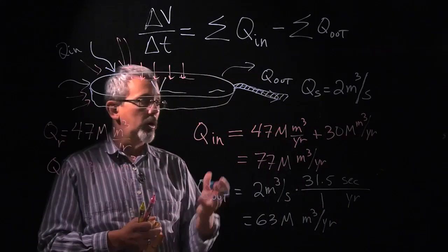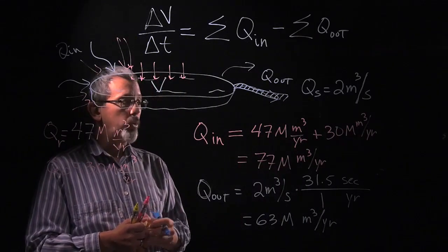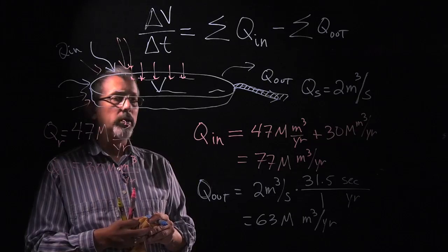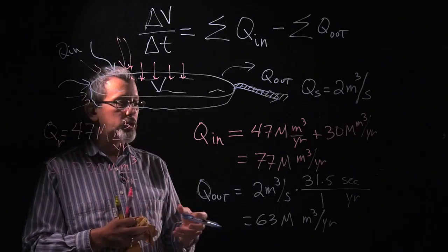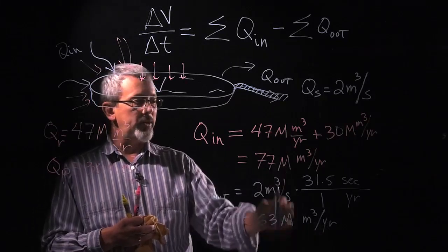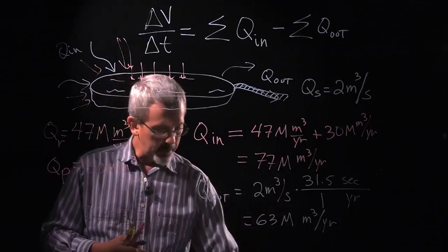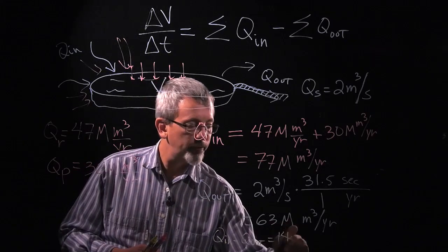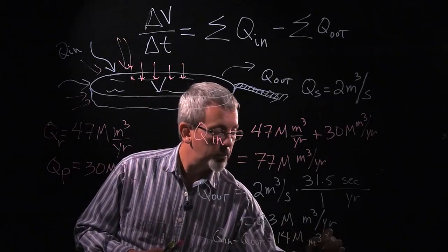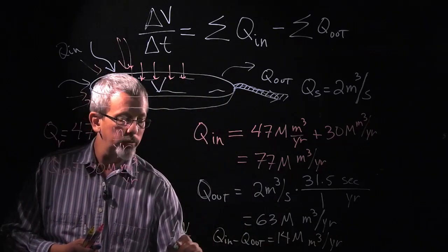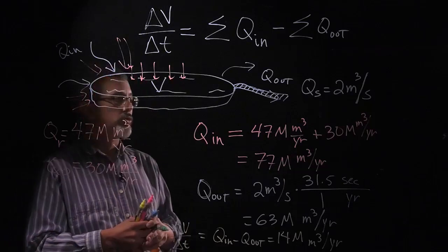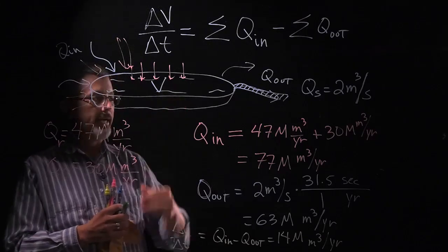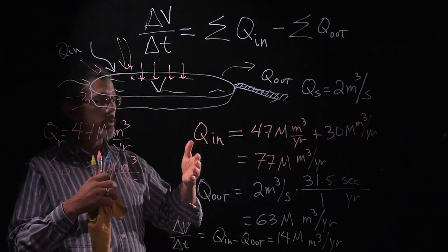Notice these two things are not equal, which means one of two things. It either means that we are going to get a change in our volume, that the volume is going to change over time. In fact, what's going to happen is each year we're going to add the difference between these two things. So if I take my Q in and subtract my Q out, I get a difference of 14 million meters cubed per year. Well, that's going to be my change in volume over change in time. So if things remain the same like this, I'm either adding 14 million meters cubed to my lake per year, which eventually means the lake is going to continue to grow and grow and grow.